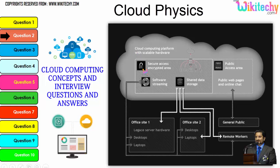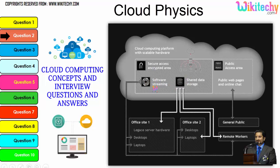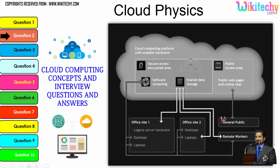Cloud computing has a public access area — public web pages for end users — and apart from this, there is secure data access, shared data storage, and software streaming. Companies can use it as a private kind of cloud, and the public can use it to access web pages or websites. That's how cloud computing works.